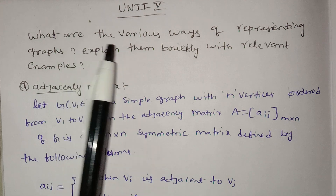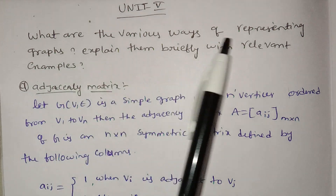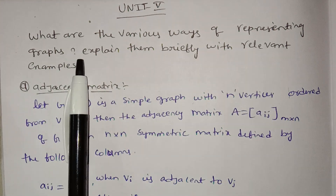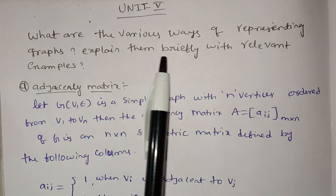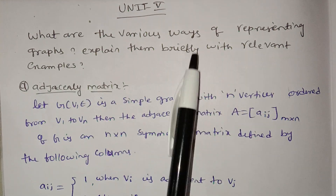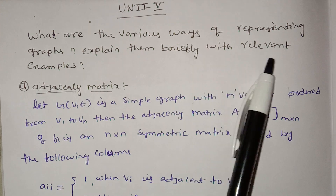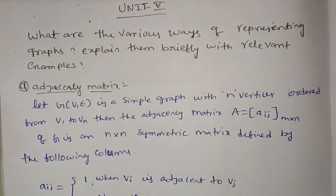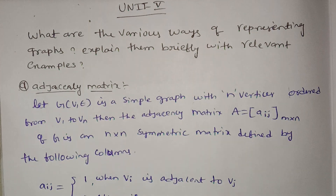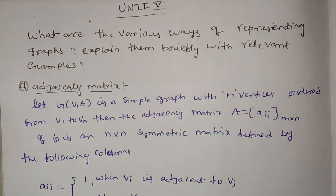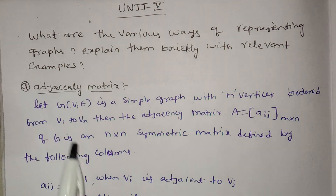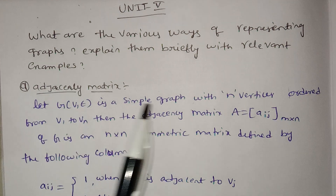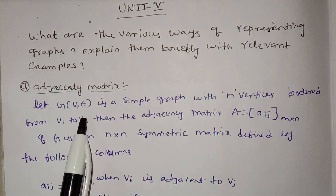What are the various ways of representing graphs? Explain them briefly with relevant examples. The first type is the adjacency matrix.